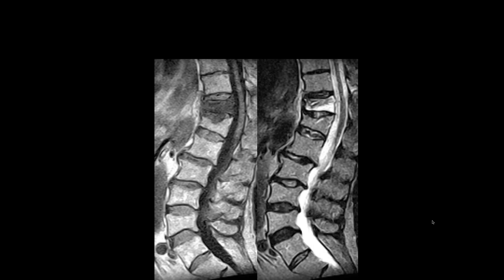Thomas: sagittal view of the thoracolumbar spine showing compression of the T11 vertebral body with diffuse edema — a typical compression fracture. The mechanism is probably forward flexion and compression. You have to check to make sure the posterior elements are intact; most of the time in this kind of injury they are, but you must check. In auto accident patients with osteoporotic spines, fractures near the seat belt level are often called chance fractures — you must confirm there are no posterior element fractures which would make it unstable.